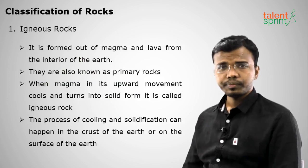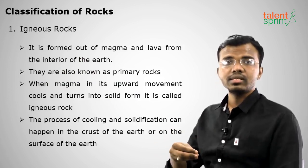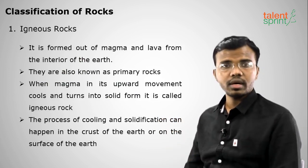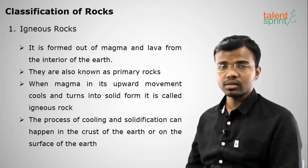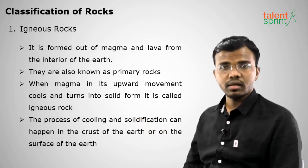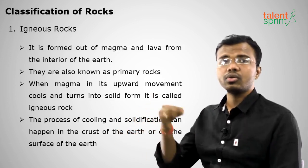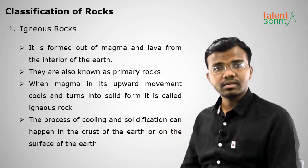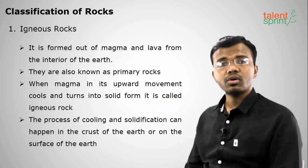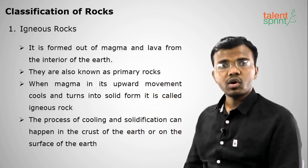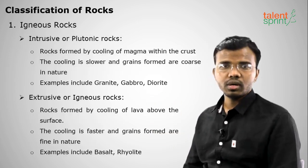Igneous rocks are formed because of magma. If the magma cools inside the Earth, it forms intrusive or plutonic rocks. If the lava cools outside the Earth, it is called extrusive or igneous rocks. Based on the cooling mechanism, these rocks are classified — igneous rocks are generally based on magma or lava cooling.